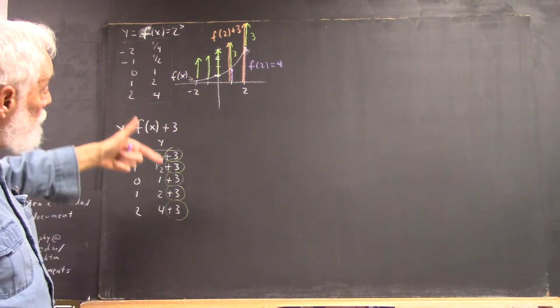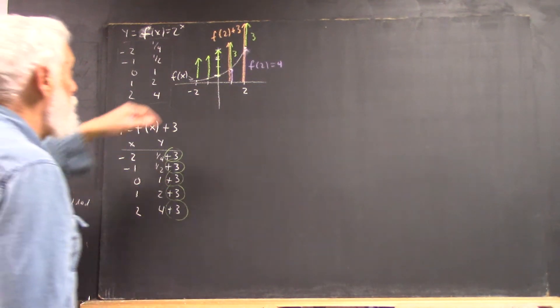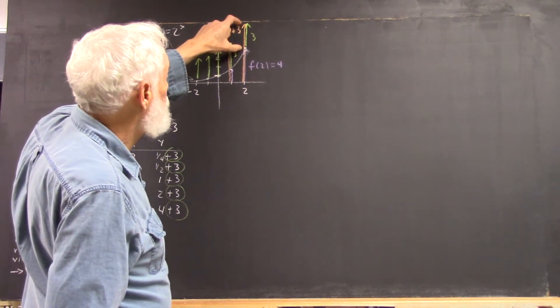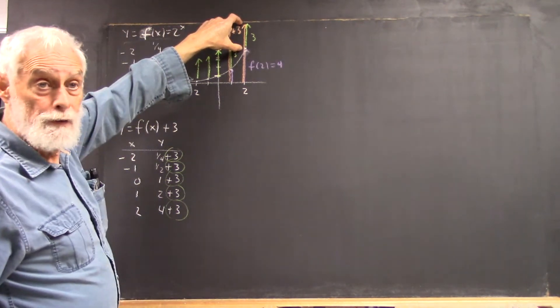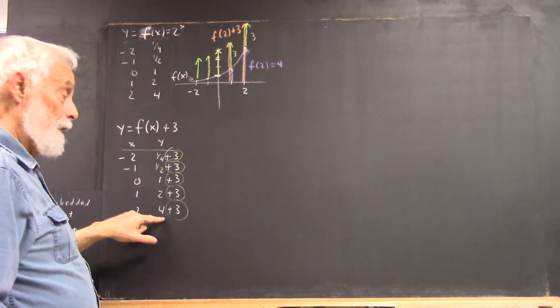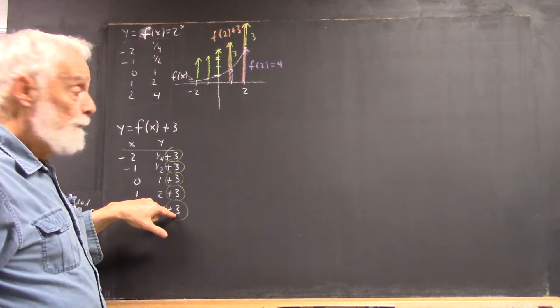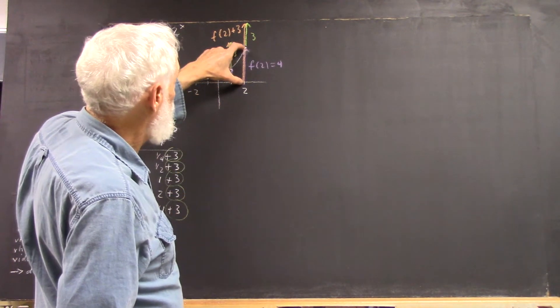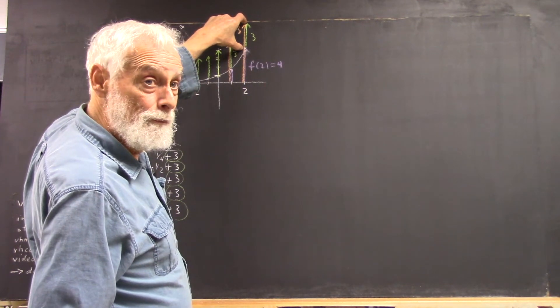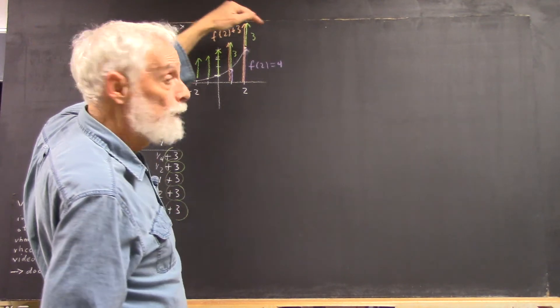Now, on the graph, that means that we take every point in this graph and raise it up 3 units. So, for example, f of 2 is 4, and of course, that's what we have here and here, and then we add 3 to that. So, here's our f of 2 equals 4, here's our plus 3.